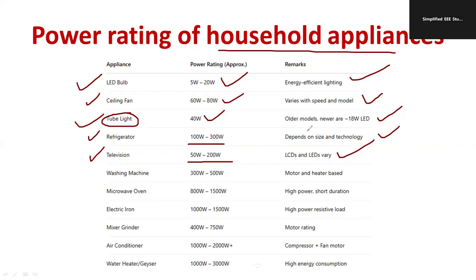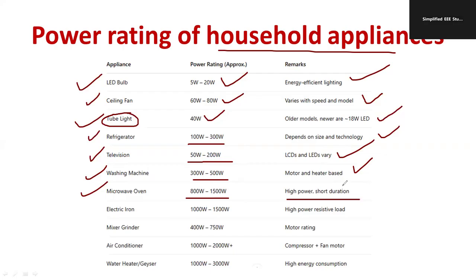A washing machine ranges from 300 watts to 500 watts, depending on the motor and whether it has a heater. A microwave oven has an extremely high power rating, ranging from 800 watts to 1500 watts. Even for short durations of use, the power rating is very high.